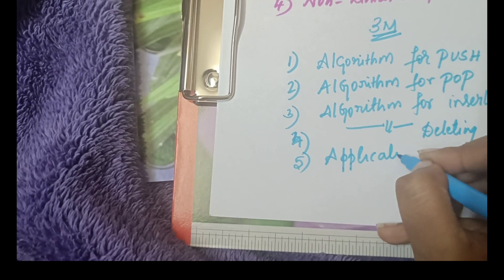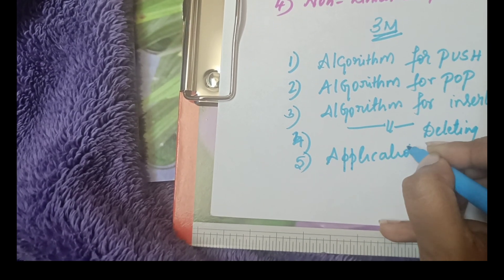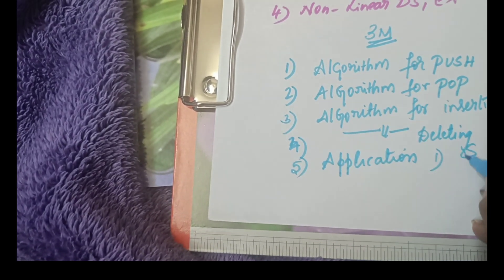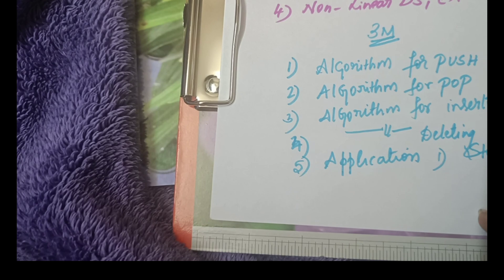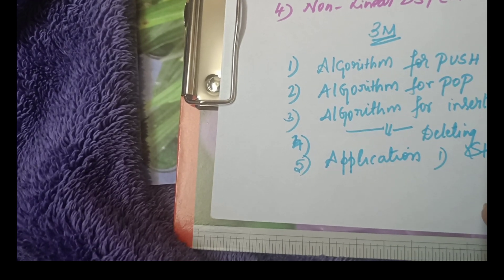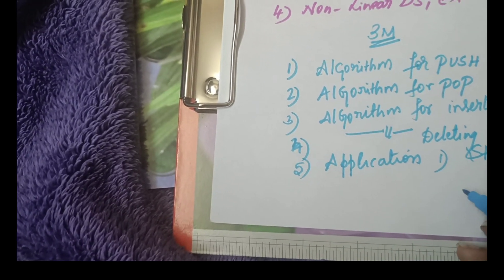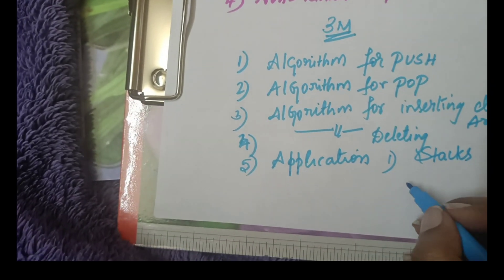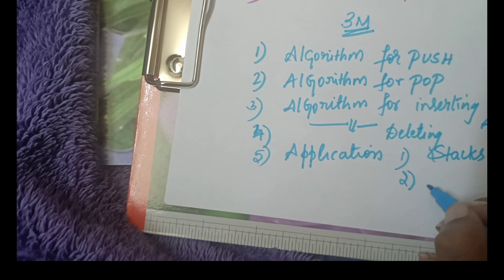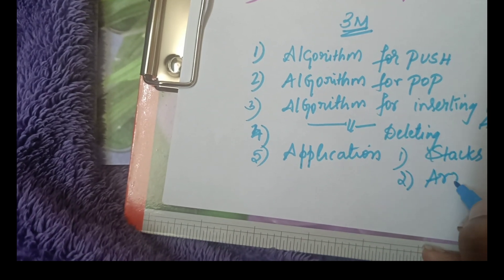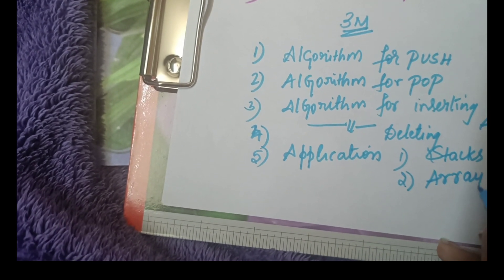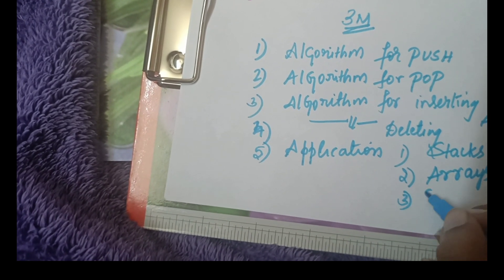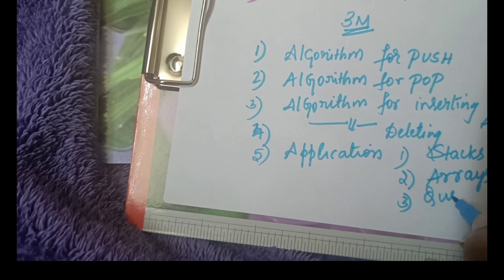All these small algorithms complete within 5 to 6 steps. And applications — the most easy and important questions are applications of stacks, applications of arrays, applications of queues, and applications of linked list.